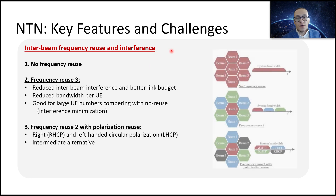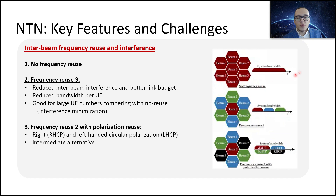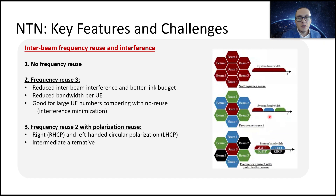Regarding frequency reuse in interbeam operation: one approach provides more reduced interbeam interference and a better link budget, but for a single user this could be less desirable since the common bandwidth is divided by several sectors, reducing the speed per user. However, this is good for interference minimization between different users. A third solution is a middle ground — frequency reuse 2 with polarization reuse, where cells and beams are also distinguished using polarization.